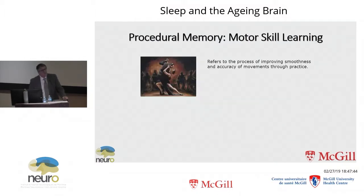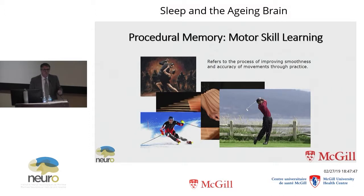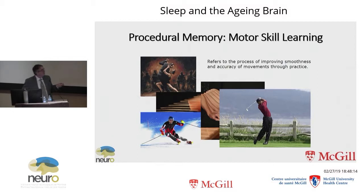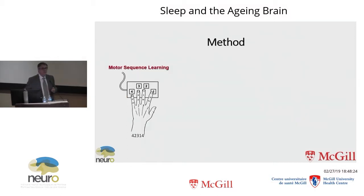To do so, I'll be focusing on one particular form of memory called procedural, which corresponds to our capacity to acquire different kinds of skills over time, and refers to the process by which improvement of smoothness and accuracy of movements is done through practice. As these movements are very complex, it's difficult to use them to study the brain in a scanner. So in my laboratory, what we've been using mainly is much simpler tasks designed to look at sequence learning.